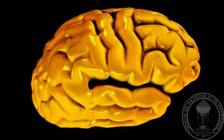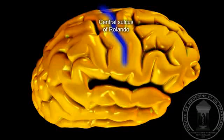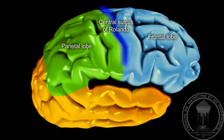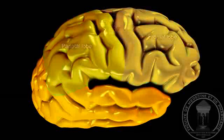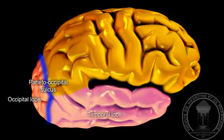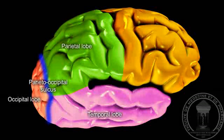The second is the central sulcus, or fissure of Rolando, between the frontal lobe and the parietal lobe. The third sulcus is the parieto-occipital sulcus, separating the occipital lobe from the temporal and parietal lobes.